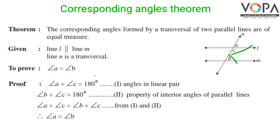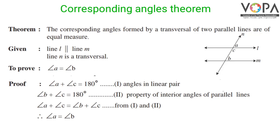Angle B plus angle C equals 180 degrees — statement 2 — by the property of interior angles of parallel lines. Since the right-hand sides of both statements are equal (both 180 degrees), the left-hand sides are also equal: angle A plus angle C equals angle B plus angle C. Since angle C appears on both sides, it cancels out, giving angle A equals angle B.